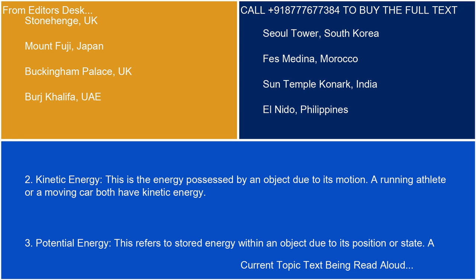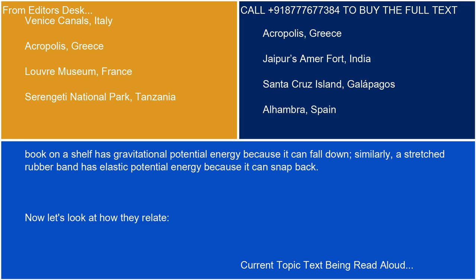3. Potential energy. This refers to stored energy within an object due to its position or state. A book on a shelf has gravitational potential energy because it can fall down. Similarly, a stretched rubber band has elastic potential energy because it can snap back.